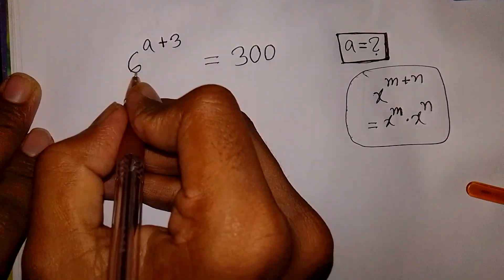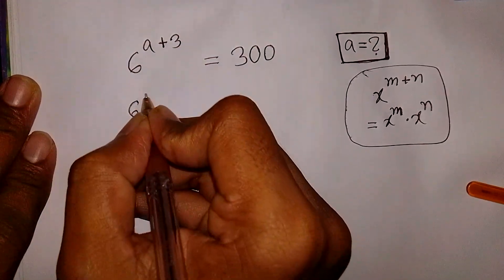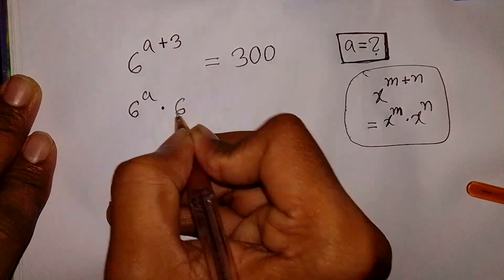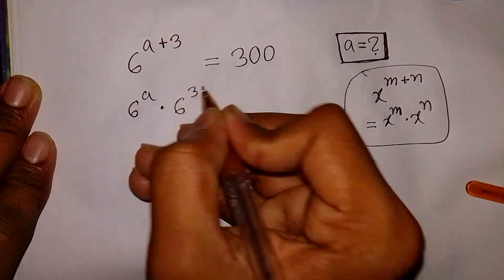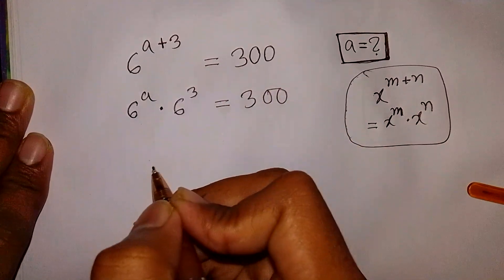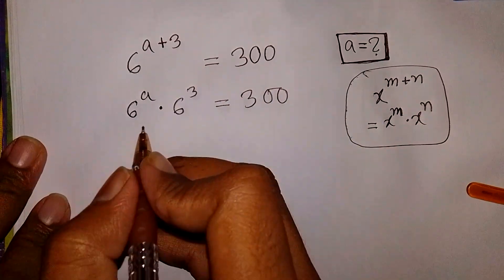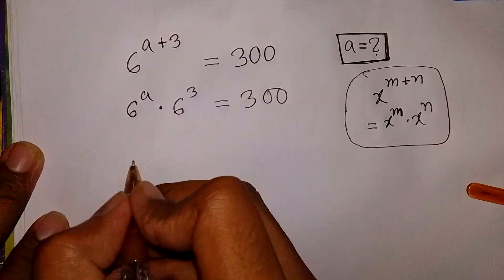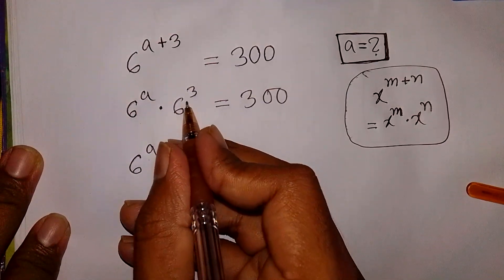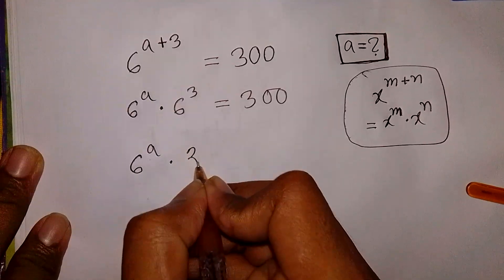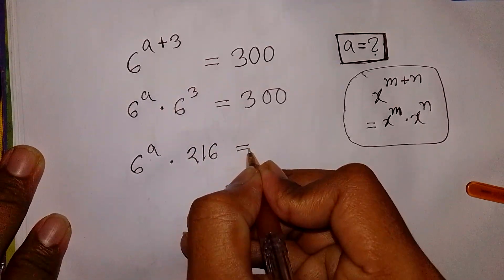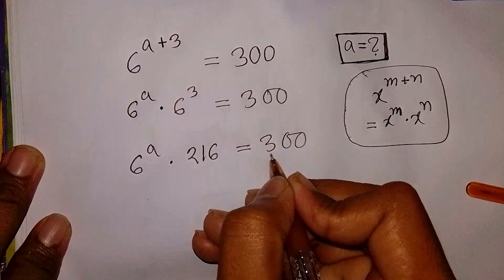So here, 6 to the power of (A plus 3) is the same as 6 to the power A times 6 to the power 3, which is equal to 300. Now, 6 to the power A times 6 to the power 3 is the same as 6 to the power A times 216, equal to 300.